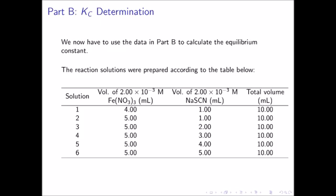The table indicates the volumes of the solutions that were used. In this case, the stock solutions for both the ferric nitrate and the sodium thiocyanate are both 2.00 times 10 to the negative 3 molar. The total volume of each solution is 10 milliliters. The volume of the ferric nitrate solution ranges from 4 milliliters in solution 1 to 5 milliliters in the remaining solutions. The sodium thiocyanate volumes range from 1 milliliter in solutions 1 and 2 up to 5 milliliters in solution 6.